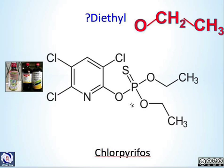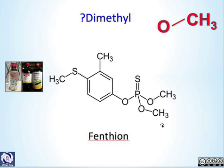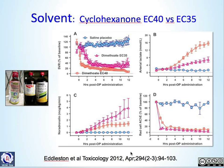The next big question is whether this is a diethyl organophosphate — as with chlorpyrifos, where the diethyl moiety is present — or whether it is a dimethyl organophosphate, as with fenthion. These are the two main classes. Finally, we need to think about what the organophosphate is mixed up in, because it is mixed up in solvents.